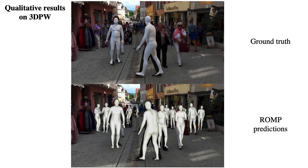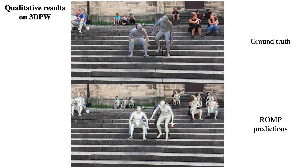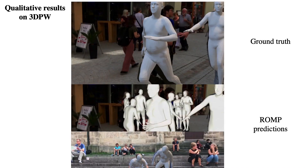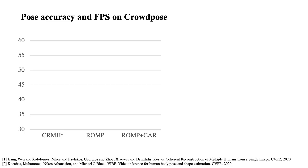Here are some qualitative results of ROMP on 3DPW. We observed that the ground truth is defined for only one or two people, but ROMP estimates the motion of most of the people in the scene.